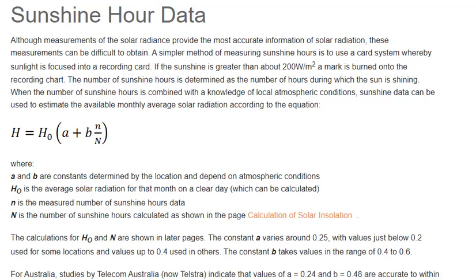When the number of sunshine hours is combined with knowledge of local atmospheric conditions, sunshine data can be used to estimate the available monthly average solar radiation according to the equation, where a and b are constants determined by the location and depend on atmospheric conditions. HO is the average solar radiation for that month on a clear day, which can be calculated.